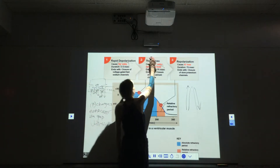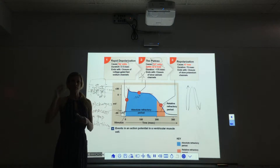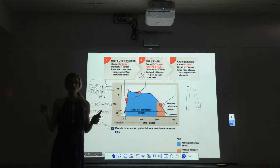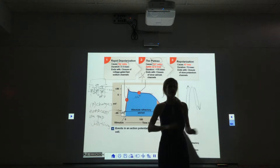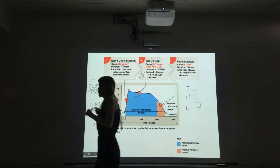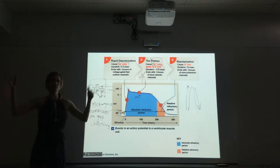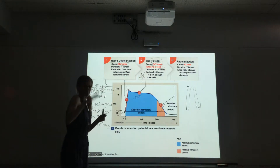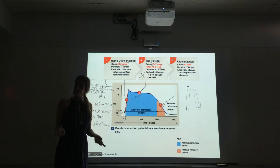We call that the plateau. This is the huge difference between skeletal muscle and cardiac muscle. Skeletal muscle — we depolarize and repolarize super fast. Here we don't. We have this plateau phase. Sodium goes out, calcium comes in, so we stay at about zero, maybe a little bit above. We stay at a really steady voltage. Then we repolarize. We repolarize with potassium, just like we did with skeletal muscle.